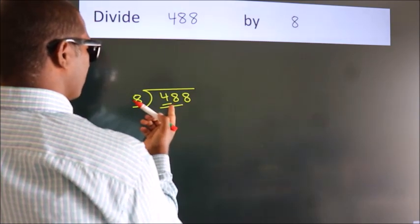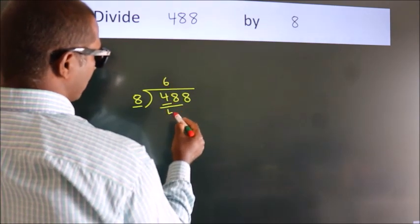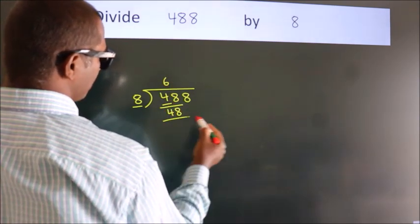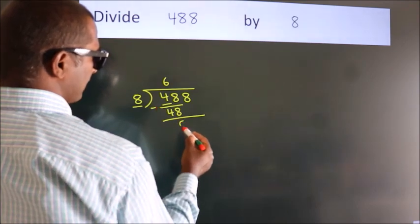When do we get 48? In the 8 table. 8 times 6 is 48. Now we should subtract. We get 0.